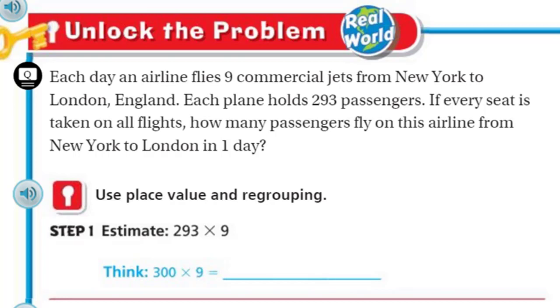It says, use place value and regrouping. Step 1 states, estimate 293 times 9. It says, think, 300 times 9. Well sure, 293 is practically 300. And I'm going to round it, which is what estimate is. We're just rounding that number to 300 because we have hundreds in our actual number. So let's go ahead and put 2,700, because all we're doing is multiplying the simple facts, which is 9 times 3, and then we're just going to add on our two zeros.